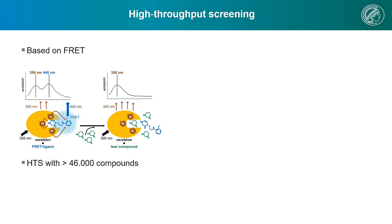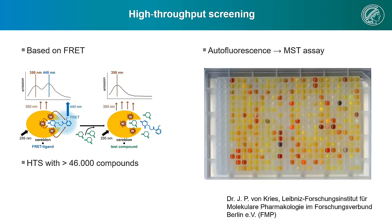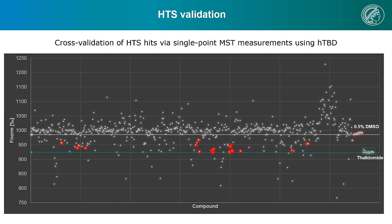This high-throughput screen was based on the old FRET assay. As there were always problems especially with autofluorescence, it presumably led to very many false-positive hits in the high-throughput screen, as we see here by these colored compounds in the typical 384-well plate. Utilizing this custom MST-based assay, we are now cross-validating several hit clusters that were identified in the high-throughput screen, shown here as single-point MST measurements. While we are still in the process of following up on several of these hits and hit clusters, I do want to share some first very exciting news.